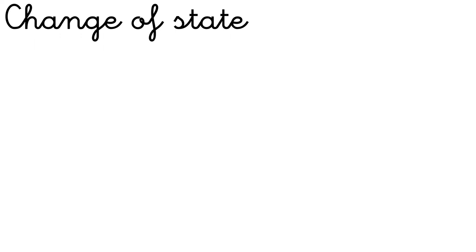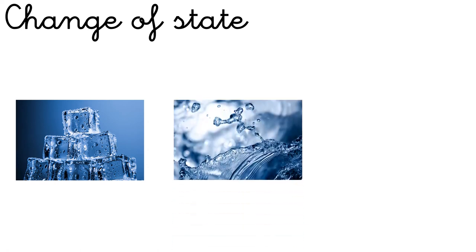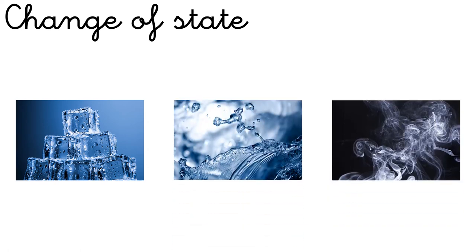Change of state. As you remember, there are three states of matter: solids, liquids, and gas. We can pass from one state of matter to another. For example, we can pass from solid to liquid by melting — for example, if we melt ice, we get water.